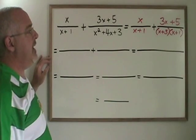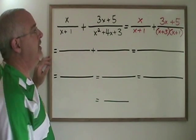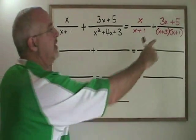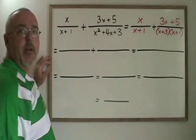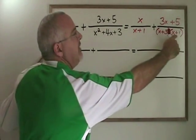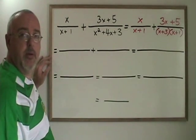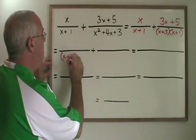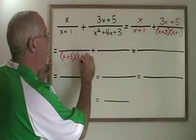The next step is to figure out what will be the common denominator for these two fractions. Since x plus one is actually a factor of this other denominator, it turns out that x plus three x plus one will be our common denominator in this case. So in both fractions in the denominator, I write x plus three x plus one.